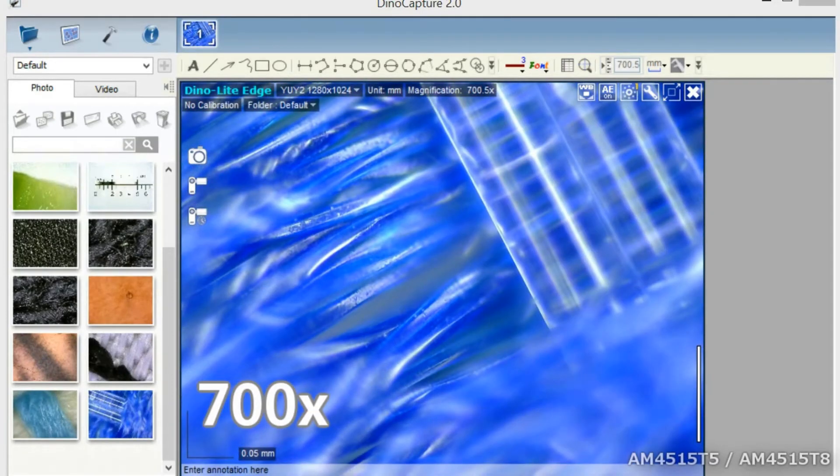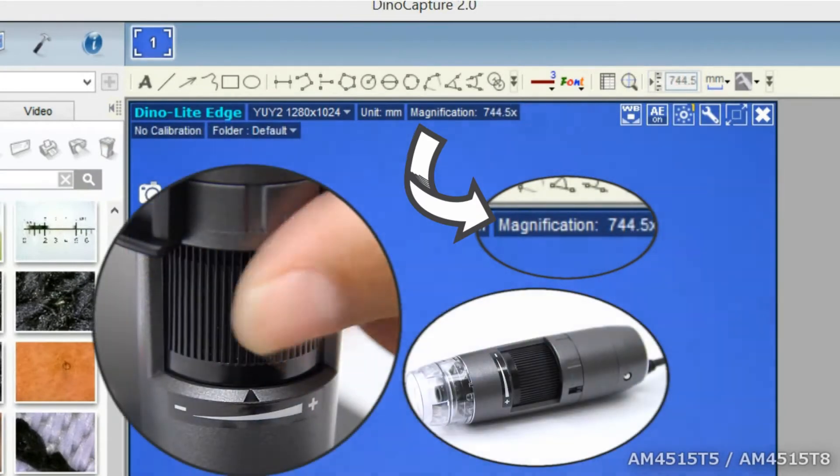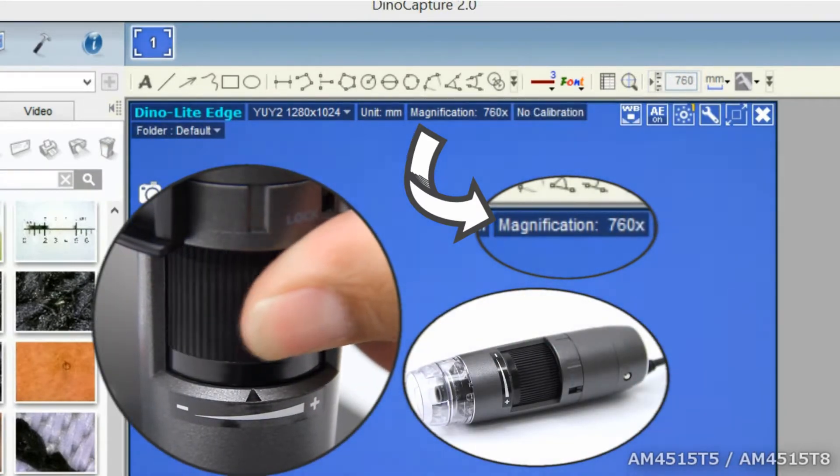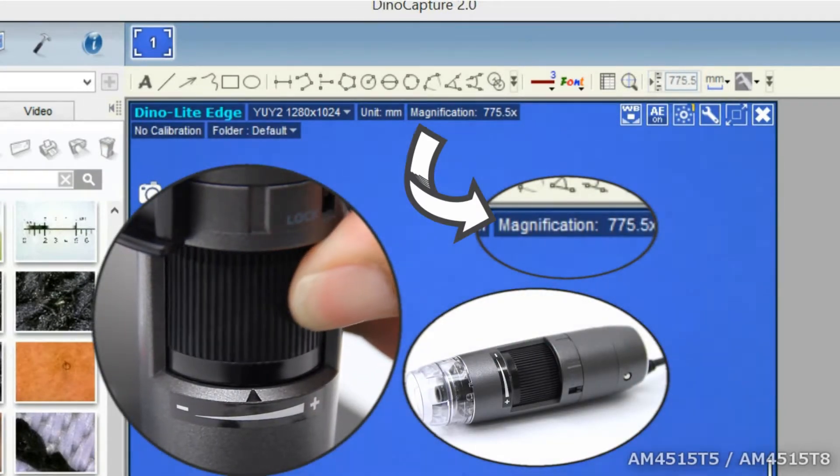Both of these Dynalight models have the automatic magnification reading feature which displays the current magnification directly in the live view window.